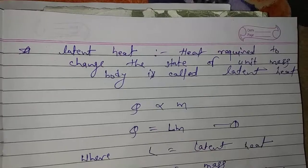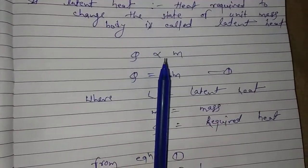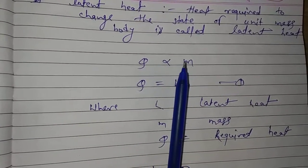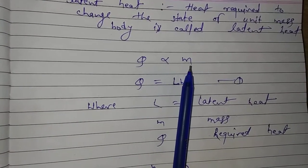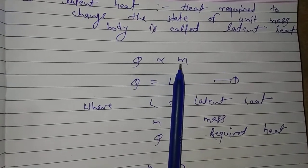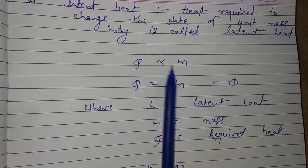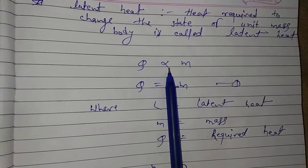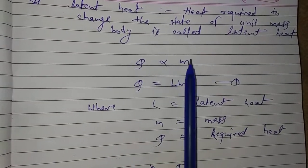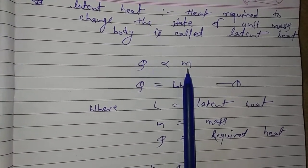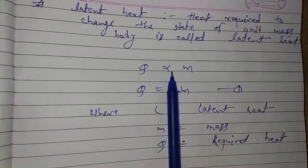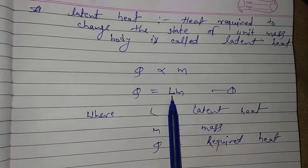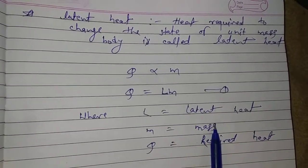So when ice is converting to water, the heat being used at that time is called latent heat. And when the temperature rose from 0 to 100 degrees, the heat used at that time is called specific heat. So let's see what latent heat is. Q is directly proportional to m. We are talking about changing state, not changing temperature. Q is directly proportional to m — meaning if there is a larger quantity of material, more heat will be required to change its state.